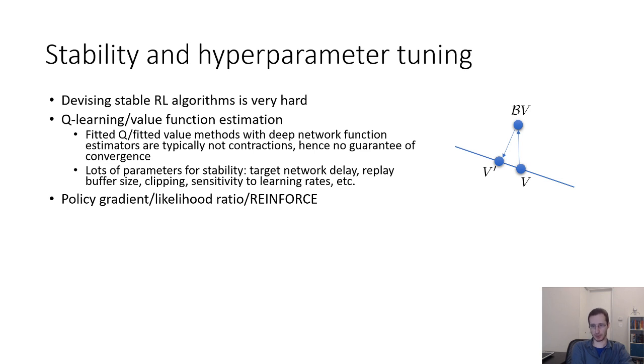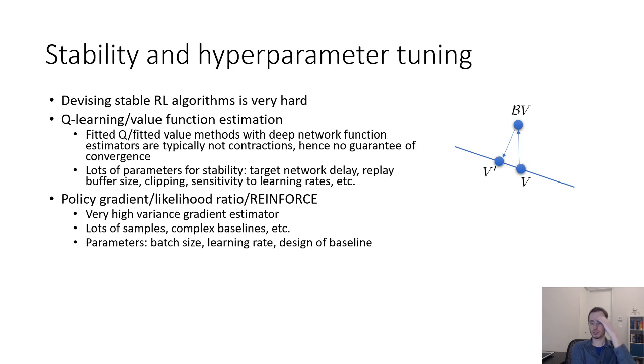Policy gradient or reinforced style methods have their own set of challenges. For example, the policy gradient estimator, while a correct and unbiased estimator in principle, is in practice a very high variance gradient estimator, which means that you either need a very large number of samples or you need to carefully adjust your learning rates. This typically means that in practice, policy gradient methods require large numbers of samples as well as a lot of effort to go into things like engineering baselines. So the important hyperparameters that you need to worry about if you're trying to use a policy gradient method would typically include things like batch size, learning rate, the design of your baseline, whether you use a control variate, things like that.